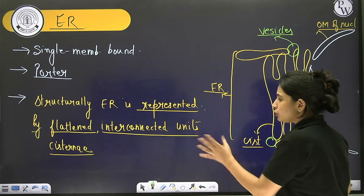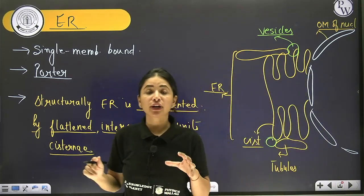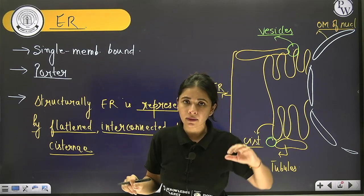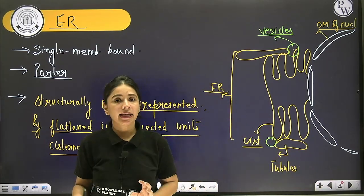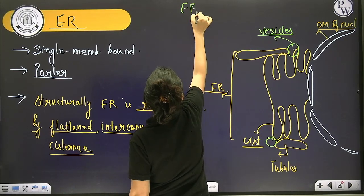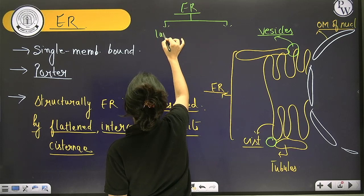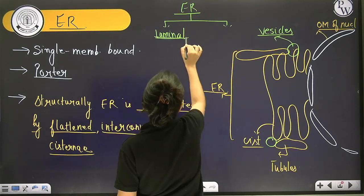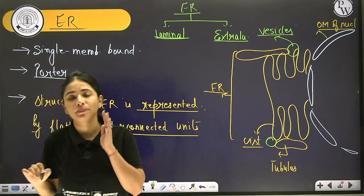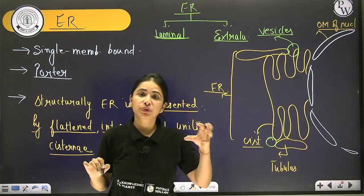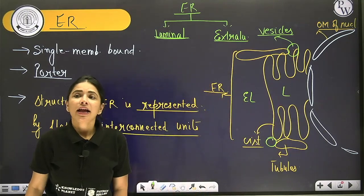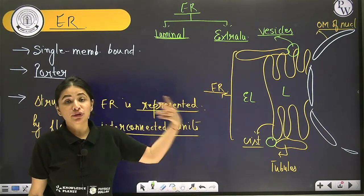Due to the structure of ER, it divides the entire cytoplasm into two parts: the luminal space — the space present inside the ER — and the extraluminal space — the space outside the ER in the rest of the cell.